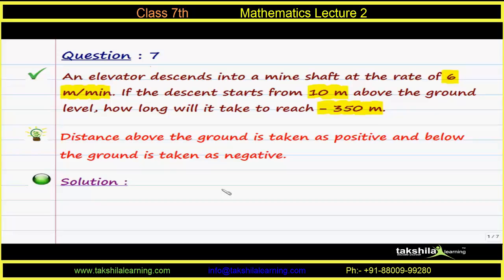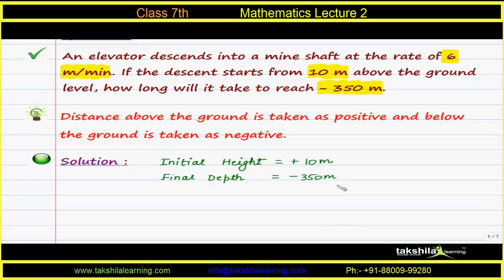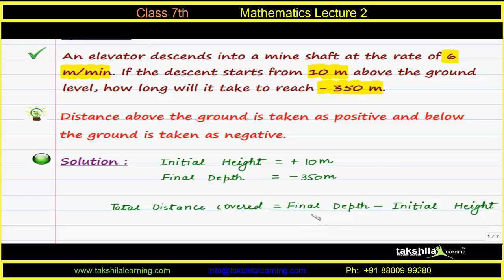We need to find the time the elevator will take to reach a depth of 350 meters below the ground. The initial height is taken as plus 10 meters since it is above the ground. The final depth is taken as minus 350 meters since it is below the ground. The total distance covered equals final depth minus initial height.